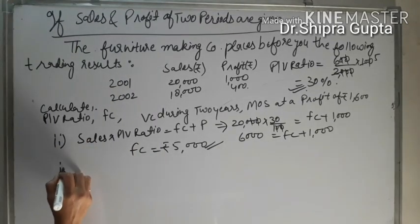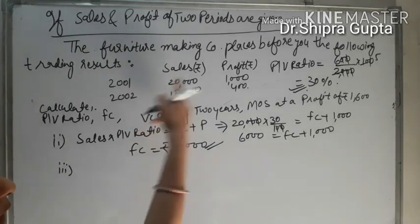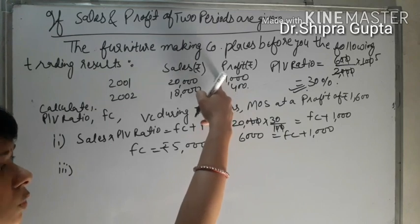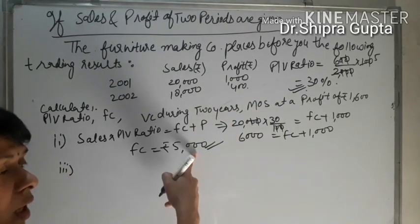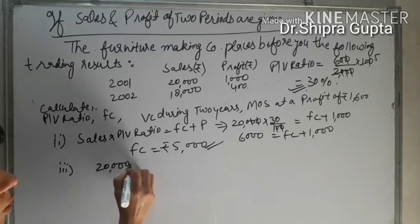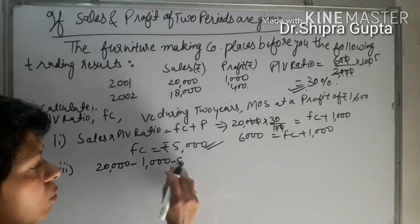Third is variable cost for both years. Variable cost equals sales minus profit, then total cost will come. In total cost we deduct fixed cost, then variable cost will come. So 20,000 minus 1,000 minus fixed cost (which always remains the same).